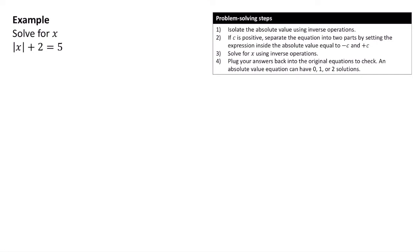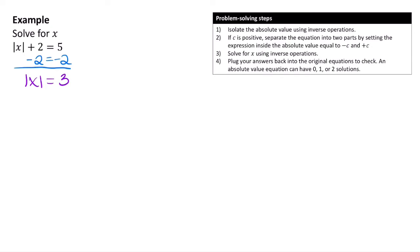Now let's try an example where the absolute value is not isolated — it has an extra plus 2. Our first step is always to isolate the absolute value. So we subtract 2 from both sides, giving |x| = 5 minus 2 = 3. Since the absolute value is now isolated, we separate into two equations: x = 3 and x = negative 3.